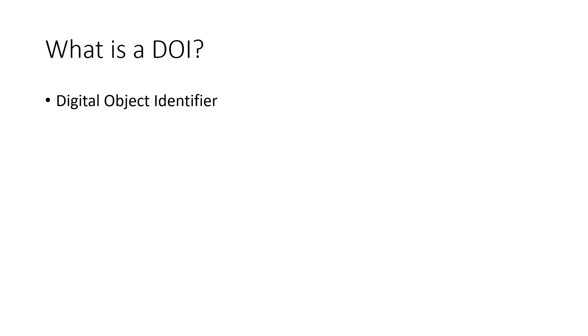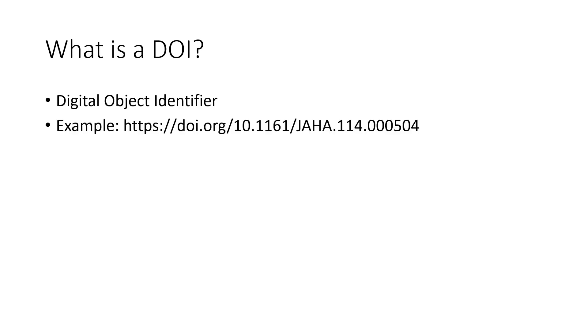You can skip to any section of this video using the timestamp in the description below. To start with, what is a DOI? DOI is the abbreviation of Digital Object Identifier. This is what a DOI will look like — it contains a string of letters, numbers and symbols. This string is unique and is assigned to a published document such as an electronic journal article.